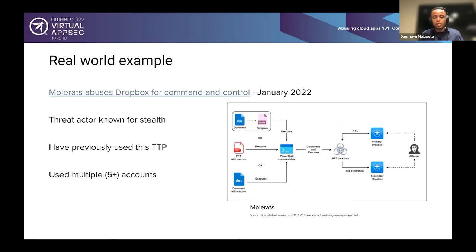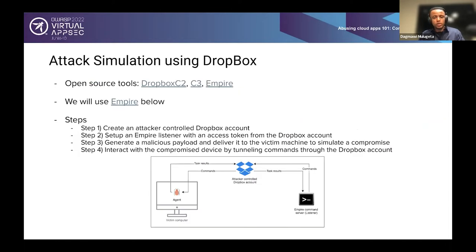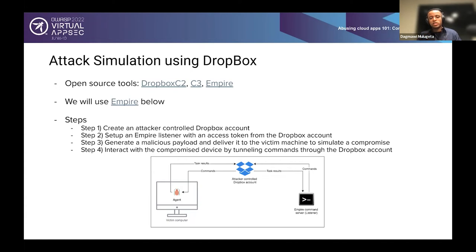To simulate this in your network, you can use tools like Dropbox C2, C3, or Empire. We're going to use Empire. We'll follow a four-step process: first, create an attacker-controlled Dropbox account; second, set up an Empire listener with an access token from that Dropbox account; third, generate a malicious payload from Empire and deliver it to the victim to simulate a compromise; and fourth, interact with the compromised device by tunneling commands through Dropbox.